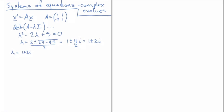For the eigenvector we take A minus (1 plus 2i) times the identity matrix. That gives us the matrix [1 minus (1+2i), 1; -4, 1 minus (1+2i)], and after a little cancellation we get the matrix [-2i, 1; -4, -2i].